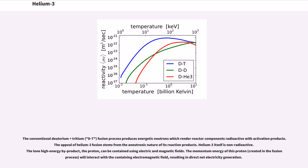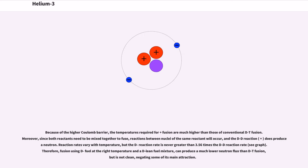The lone high-energy byproduct, the proton, can be contained using electric and magnetic fields. The momentum energy of this proton, created in the fusion process, will interact with the containing electromagnetic field, resulting in direct net electricity generation.